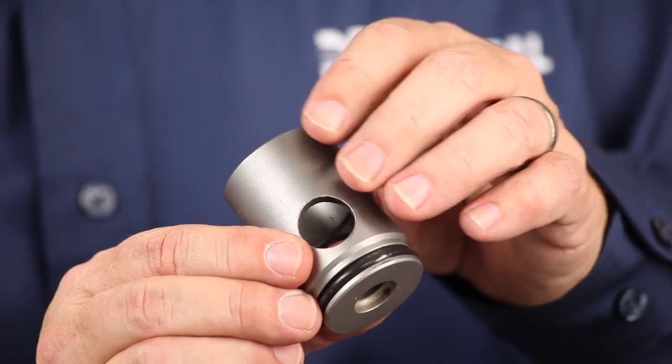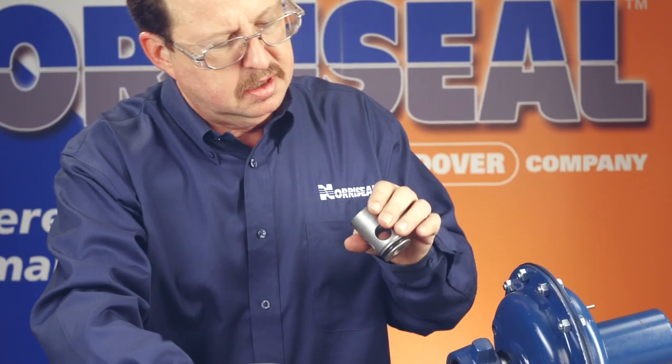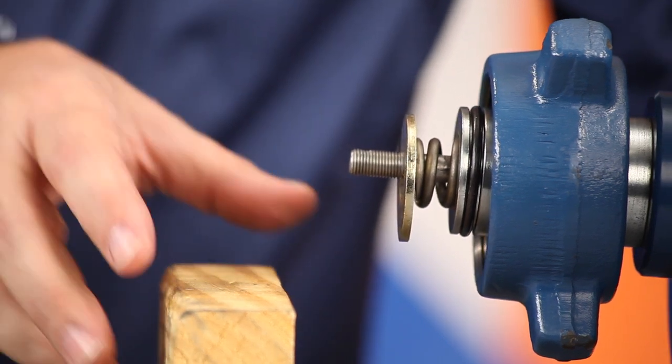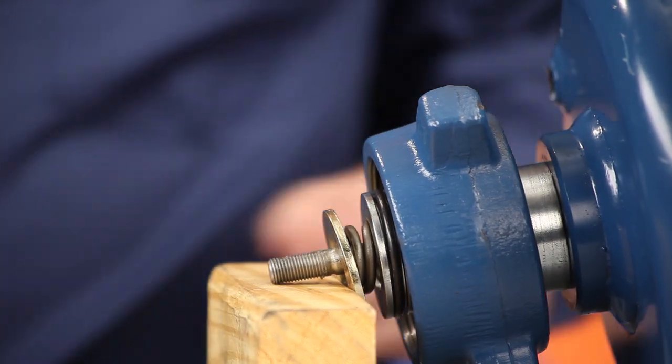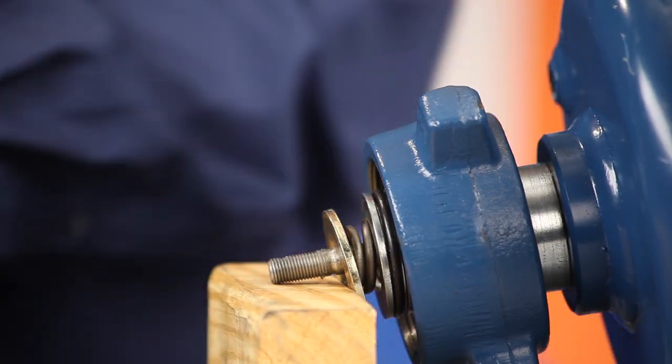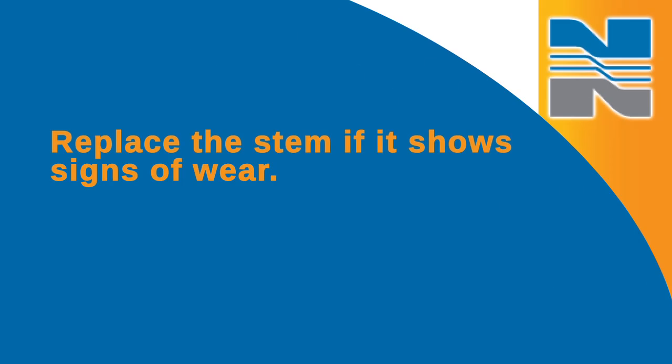Examine the valve plug and seat to make sure there's no damage to the sealing surfaces. You also want to examine the stem for pitting, scratches, or damage in the area adjacent to the packing and o-ring. Replace the stem if it shows signs of wear.